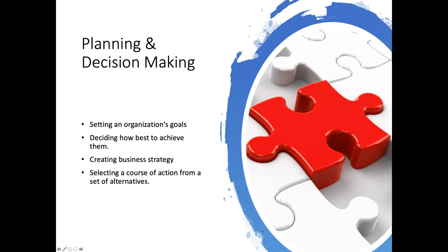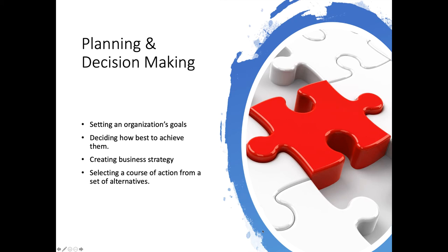Planning and decision making involves a variety of things: setting an organization's goals, deciding how best to achieve them, and creating business strategy — we'll cover that in a subsequent module. It also involves selecting a course of action from a set of alternatives. Planning and decision making means choosing one option from perhaps several, with the goal of making wise, informed business decisions steeped in experience and wisdom from the real business world.